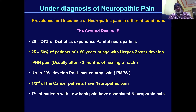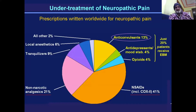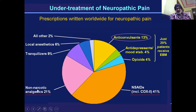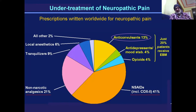As already discussed, neuropathic pain has been underdiagnosed and undertreated — drugs other than the genuine indications are being given. For example, non-narcotic analgesics are being given to 41 to 21% of patients while these are not the appropriate drugs. The genuine drugs — anticonvulsants and antidepressants — account for only 13 to 14%, which is the reason neuropathic pain has not been very well treated.